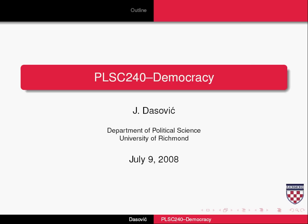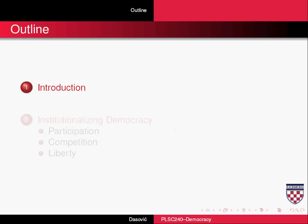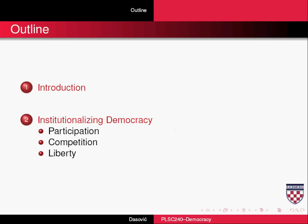In this podcast we'll take a look at democracy, an important topic obviously. We'll introduce it and look at the different manner in which democracy is institutionalized. There are three main ways of institutionalizing democracy according to O'Neill: participation, competition, and liberty.